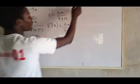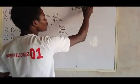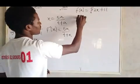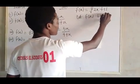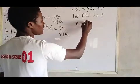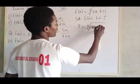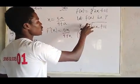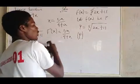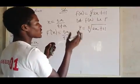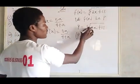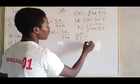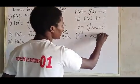The third example: we have F of X equals the fifth root of two X plus eleven. Let F of X equal P, so P equals the fifth root of two X plus eleven. The first thing we do is eliminate the root — like with a square root you square both sides, with a cube root you cube both sides. This is a fifth root, so you raise both sides to the power of five. That gives you P to the power five equals two X plus eleven.